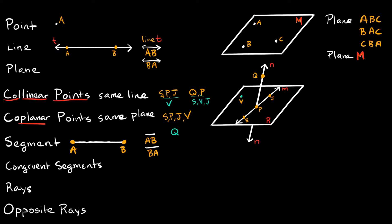Congruent segments are just segments that have the exact same length. It doesn't matter what direction they're drawn; they just have to have the exact same length. So if I told you this one is 5 inches and this one is also 5 inches, then you would say segment AB equals segment CD. You could write it as segment AB is equal to segment CD, or another way: segment AB is congruent to segment CD — that congruent symbol is basically an equal sign with a squiggle on top.